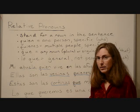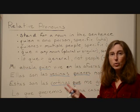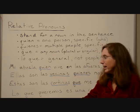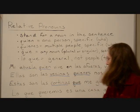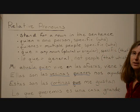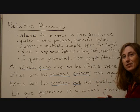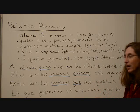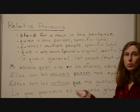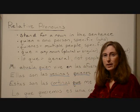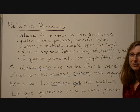With lo que we're talking about a general idea, and it translates as 'that which.' For example: Lo que queremos es una casa grande — that which we want is a big house. Even though 'casa grande' sounds like a specific noun, we're talking about a general idea — that which we want. Lo que queremos es una casa grande.